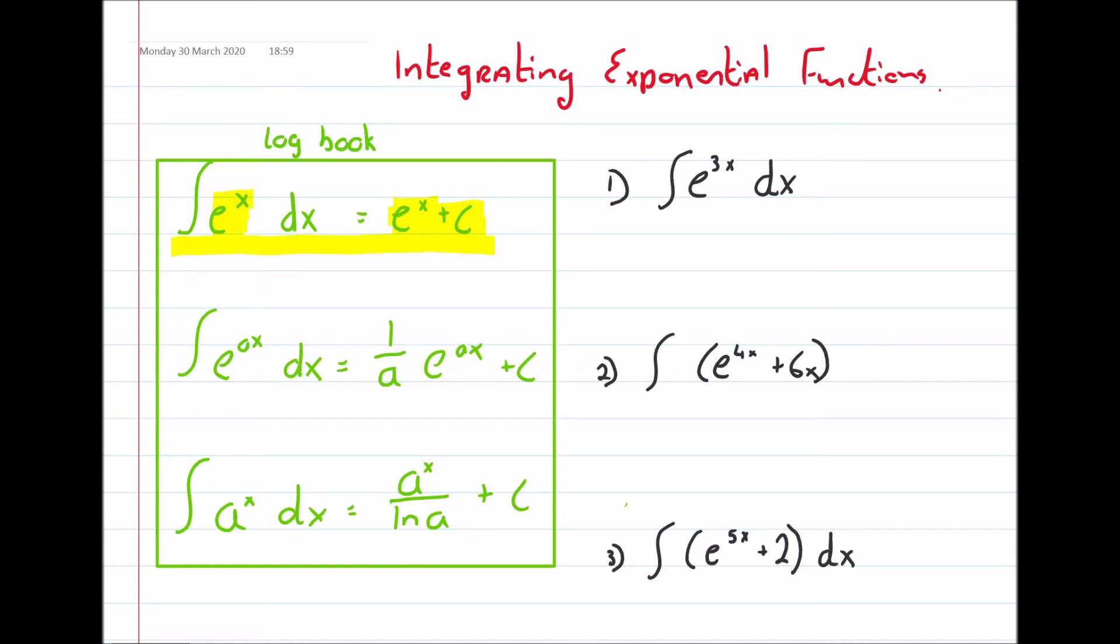Next one, if we're integrating e to the power of some number x, what we do is first of all put 1 over whatever that number is, and then we multiply by e to the power of ax. And of course, put in the c.